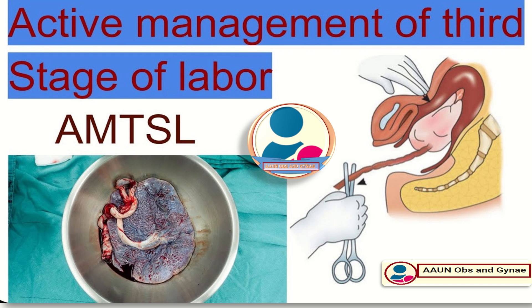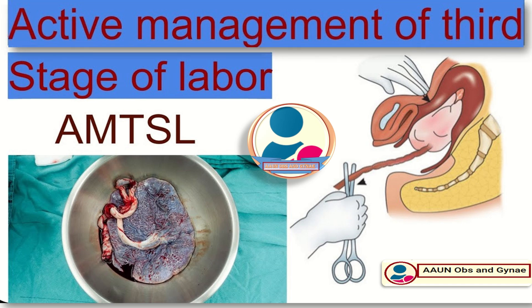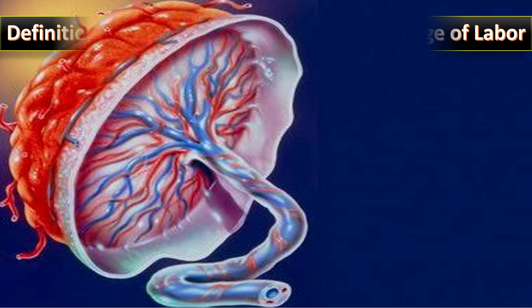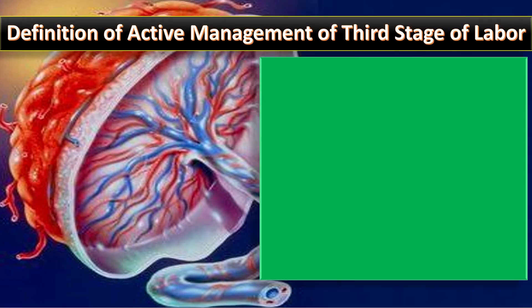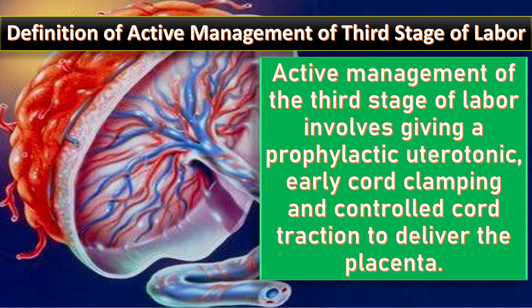Active management of third stage of labor is the topic of our discussion today. Active management of third stage of labor involves giving prophylactic uterotonics, early cord clamping, and controlled cord traction to deliver the placenta.